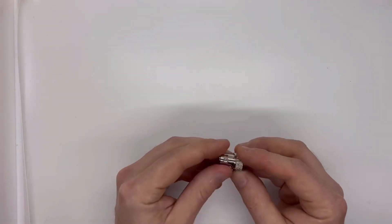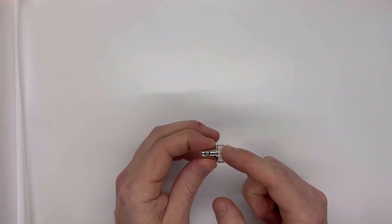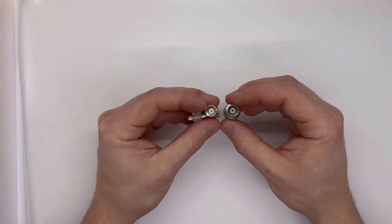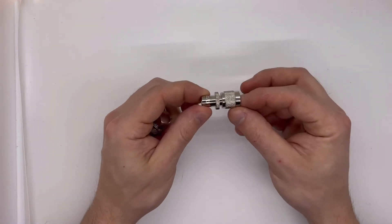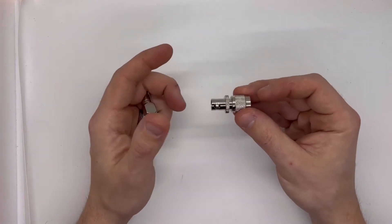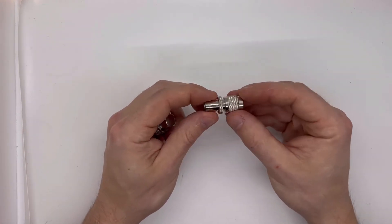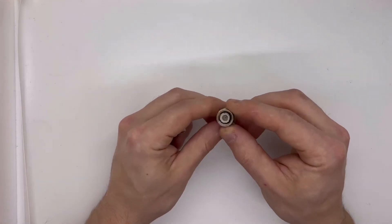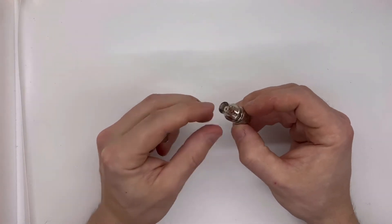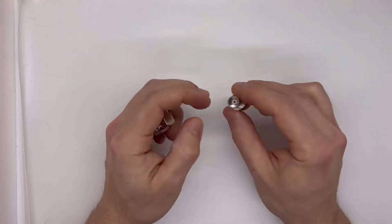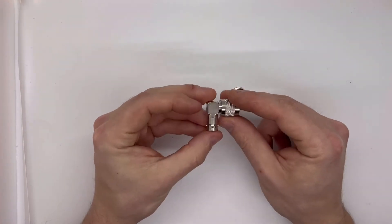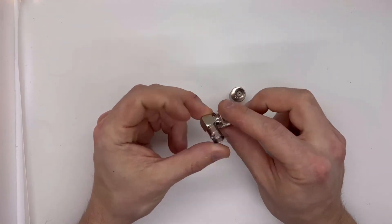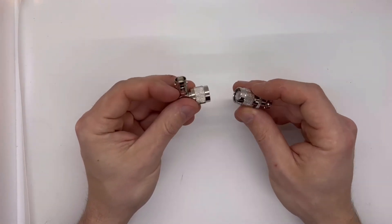These two are TNC male to BNC female. This adapter here I actually don't sell separately on the website. We're planning to put them up; there's just supply issues. But this comes with the RTO, so if you want a straight TNC male to BNC female, you have to get the RTO package to get this one. Then these are sold separate or you can buy them combined with an RTO package. This is a 90-degree variant.